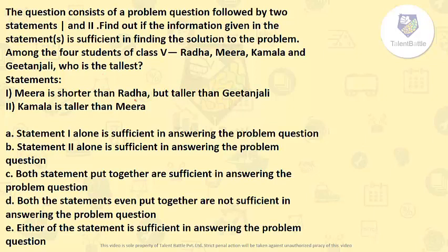So again this is an example of data sufficiency statements. Meera is shorter than Radha but taller than Gitanjali, and Kamala is taller than Meera. So let us write whatever they have given.